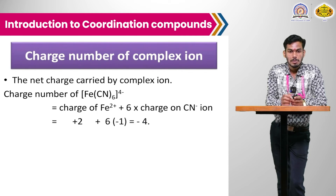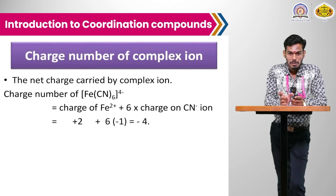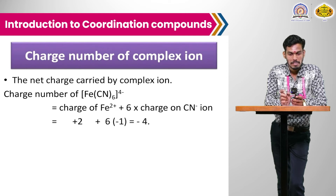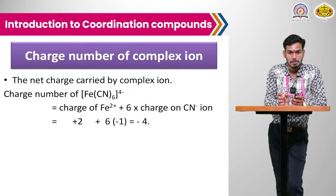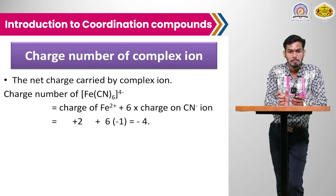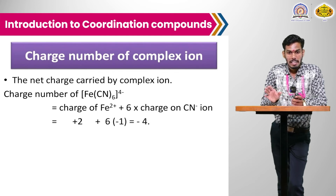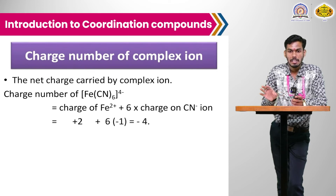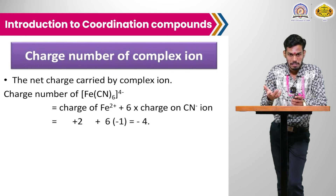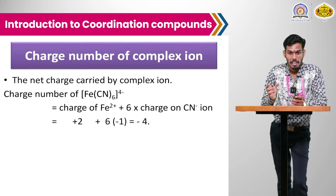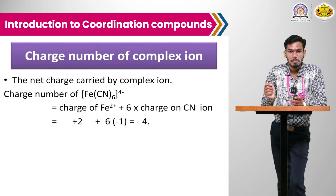The net charge carried by the complex ion can be calculated by summing the charge on the metal and the charges of all ligands. For example, for [Fe(CN)6]: Fe2+ gives +2, and 6 cyanide ligands each with −1 charge gives 6 × (−1) = −6; so the net charge is +2 + (−6) = −4. The complex ion can be cationic, anionic, or neutral depending on this net charge.